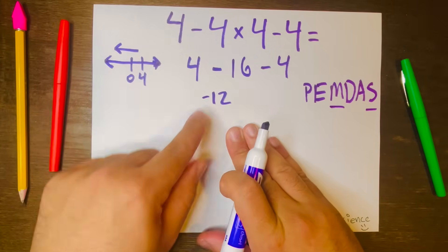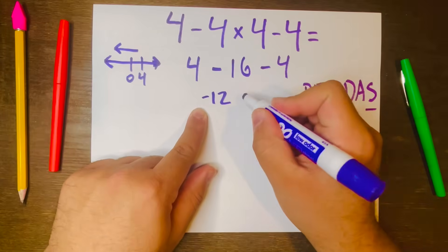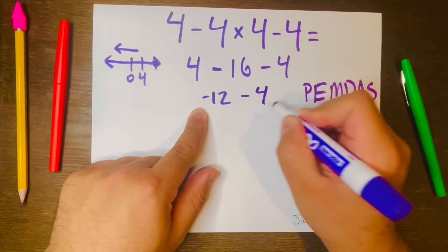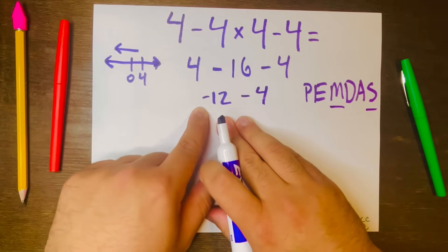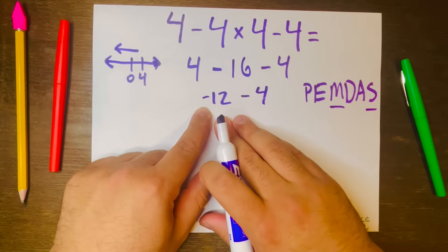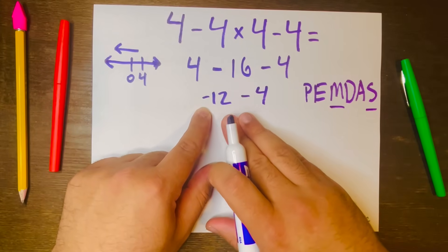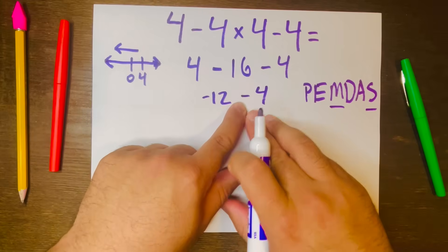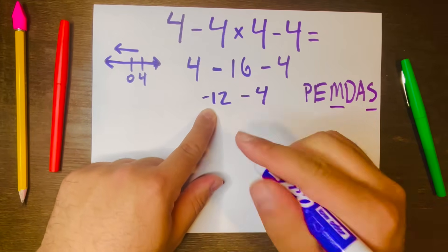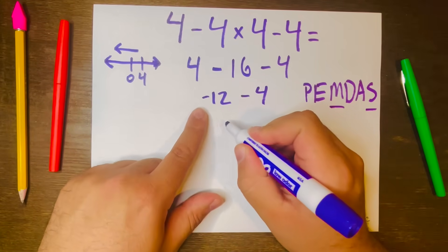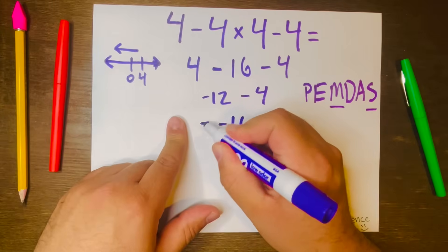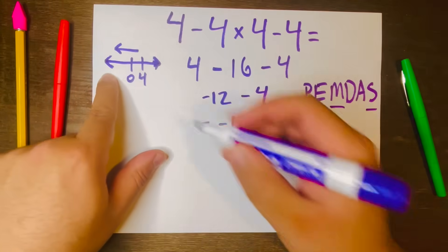So 4 minus 16 is negative 12, and then we bring down this minus 4. And then again, you can use that same money scenario: you're owing negative 12, and now they add another four dollars to what you owe. So that would be negative 16, that will be your answer.